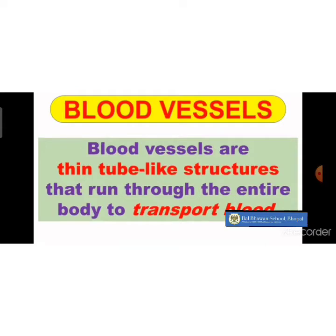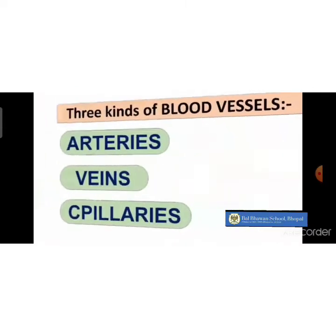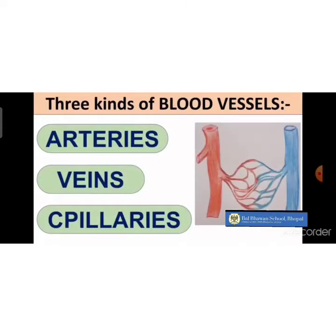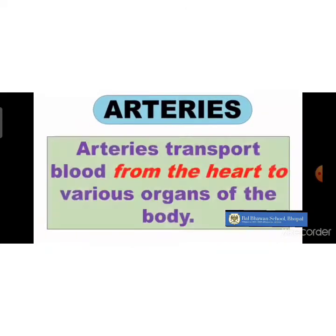Now talking about blood vessels — blood vessels are thin tube-like structures that run through the entire body to transport blood. There are three types of blood vessels: arteries, veins, and capillaries.